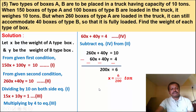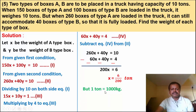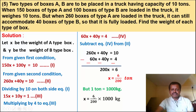Note that 1 ton is equal to 1000 kg. So simplifying x equals 6 upon 200, and converting: x equals 30 kg.